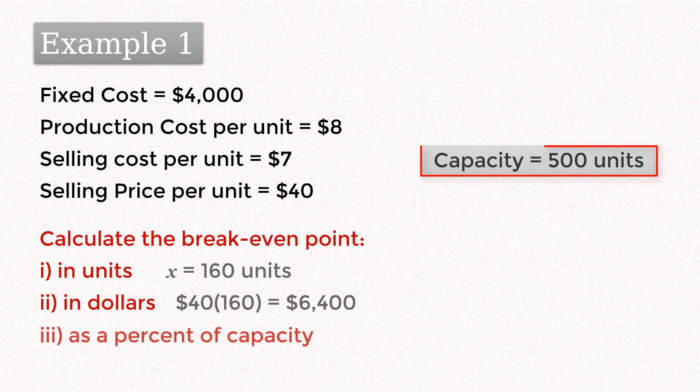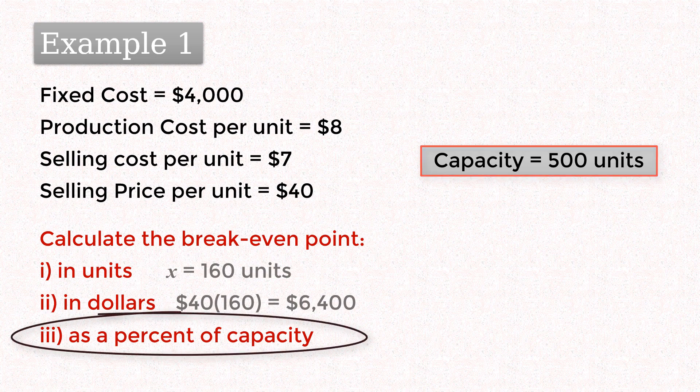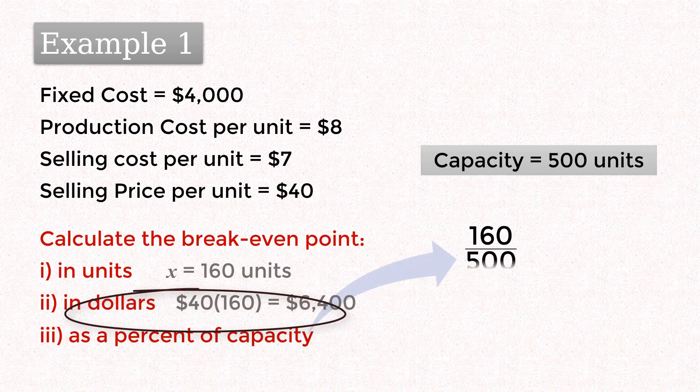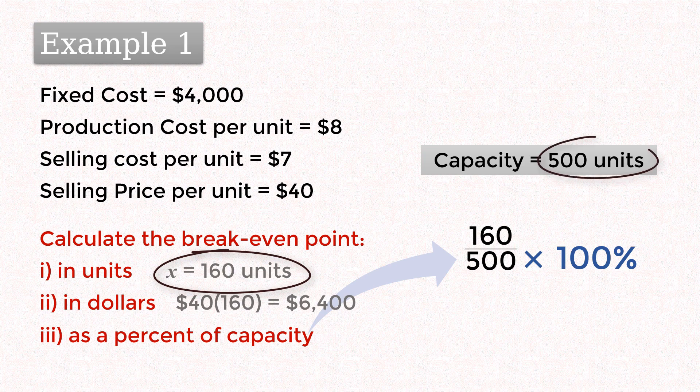Now, suppose this business has a capacity to produce only 500 units. Then we can calculate the breakeven points as a percent of capacity by simply dividing the breakeven points in units by the capacity units. And that would give 32%. In essence, we need to reach 32% of capacity before breaking even.